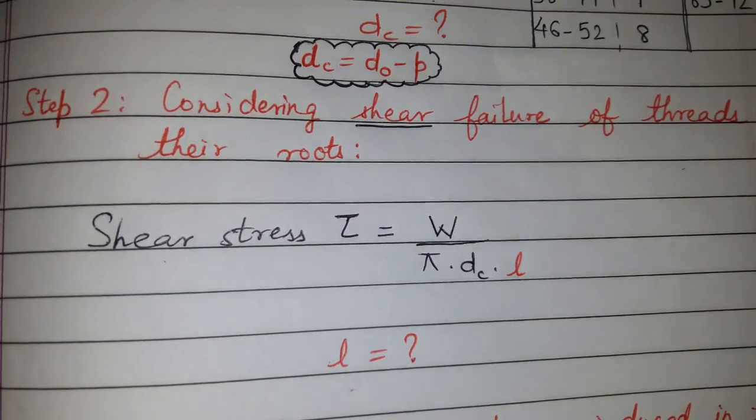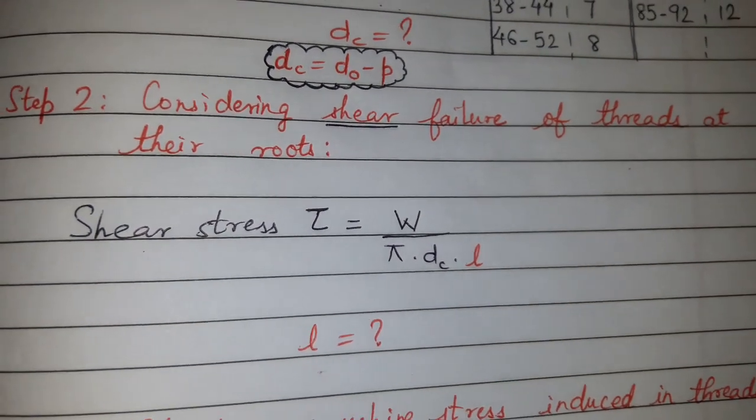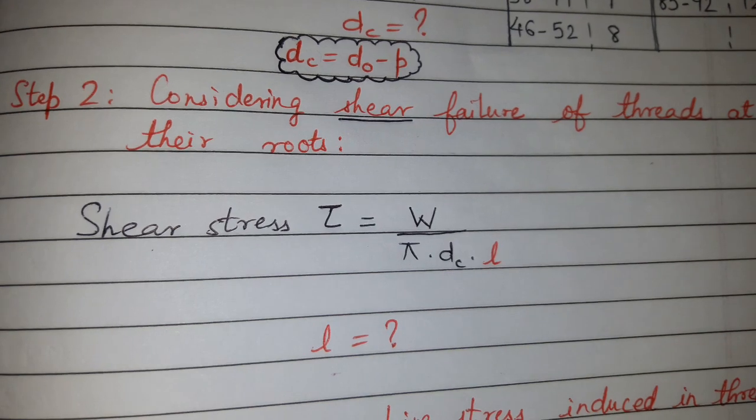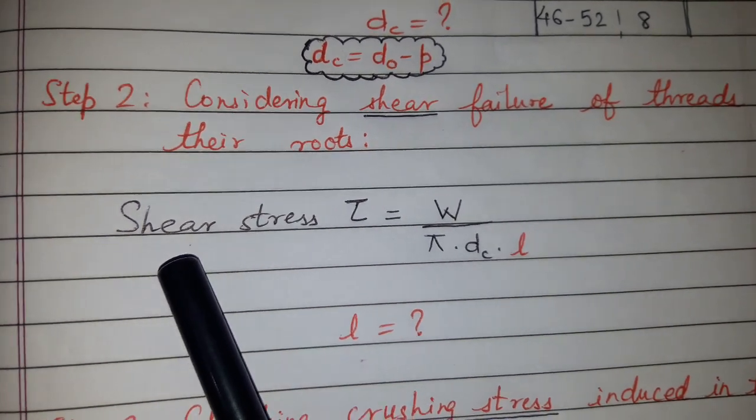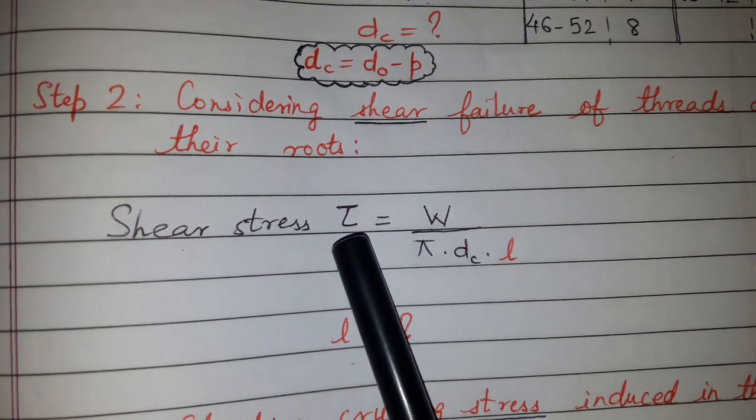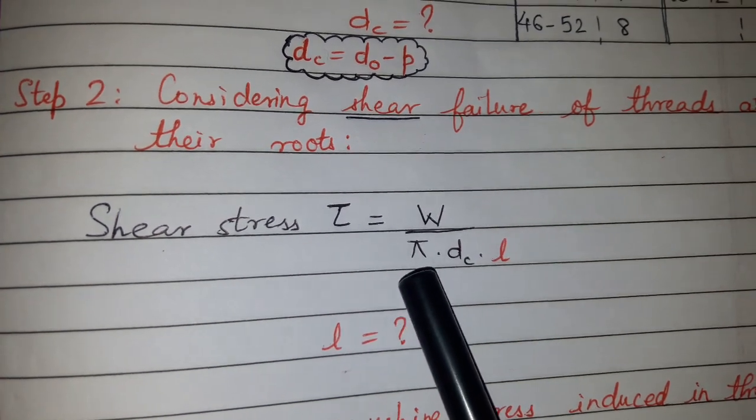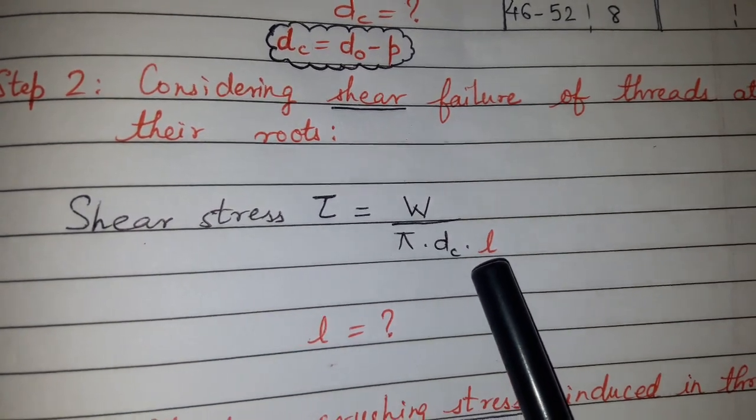Step 2: considering shear failure of thread at root. Shear stress, which will be given, equals load upon the affected area, that is π × DC × L. From here you can find this L.